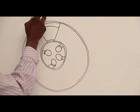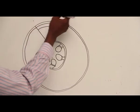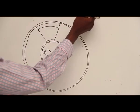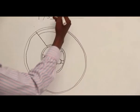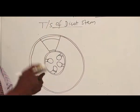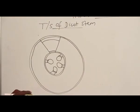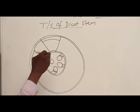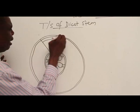This is the transverse section of dicot stem. In other words, this is a cross section. We cut a stem, then you slice the stem across. So, with the epidermis.